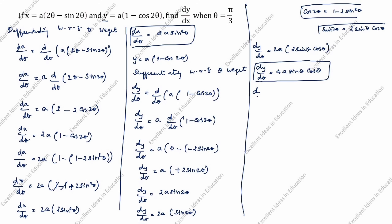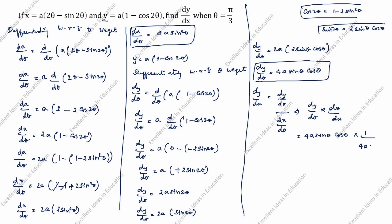But in this question what we need to find is dy/dx. dy/dx equals dy/dθ divided by dx/dθ, which is dy/dθ multiplied by dθ/dx. So dy/dx equals 4a·sinθ·cosθ multiplied by 1/(4a·sin²θ). The 4a cancels, leaving cosθ/sinθ, which is cotθ.